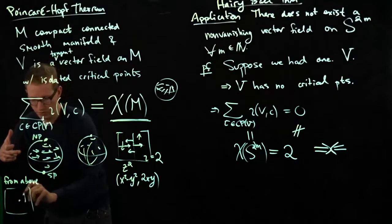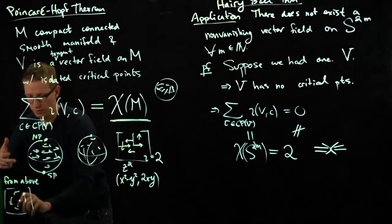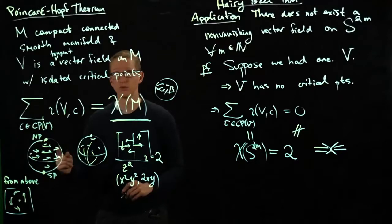I take this and look at it from above, it's going counterclockwise, that vector field, and we know that the index of this is 1.